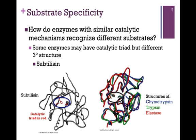We find also that there may be enzymes that have a different tertiary structure, and yet the active site residues are the same. That is true for subtilisin, pictured in the gray trace on the left. As you can see, a very different structure from chymotrypsin, trypsin, and elastase, and yet the active site residues are the same. So in this case, a different tertiary structure, but the active site the same.